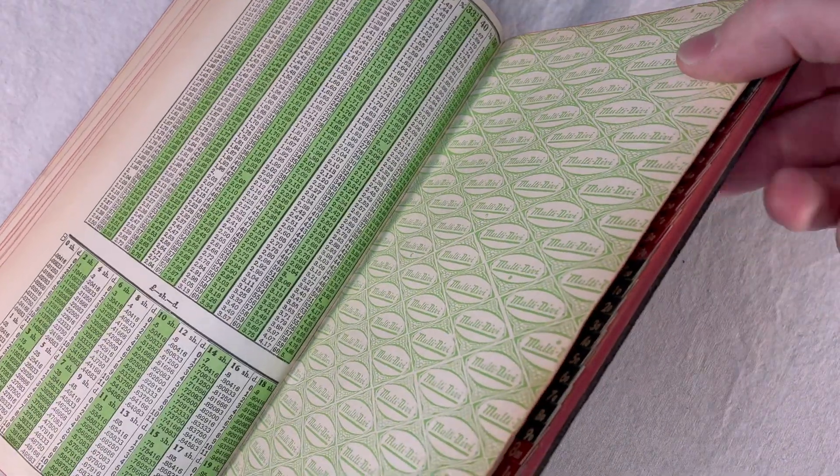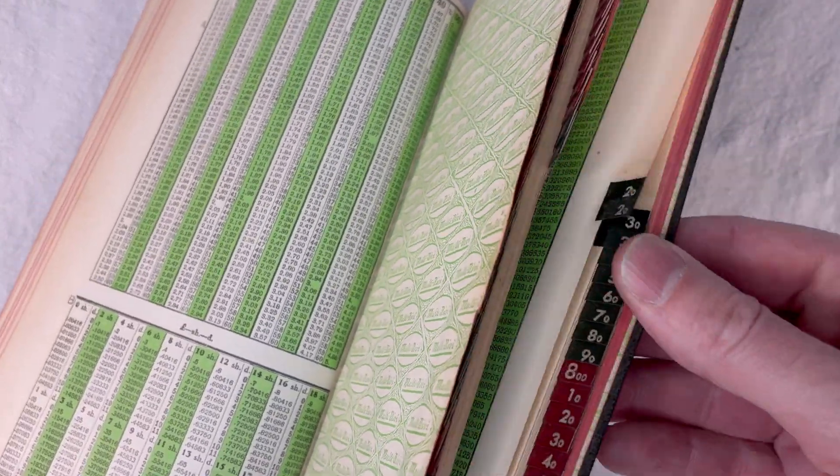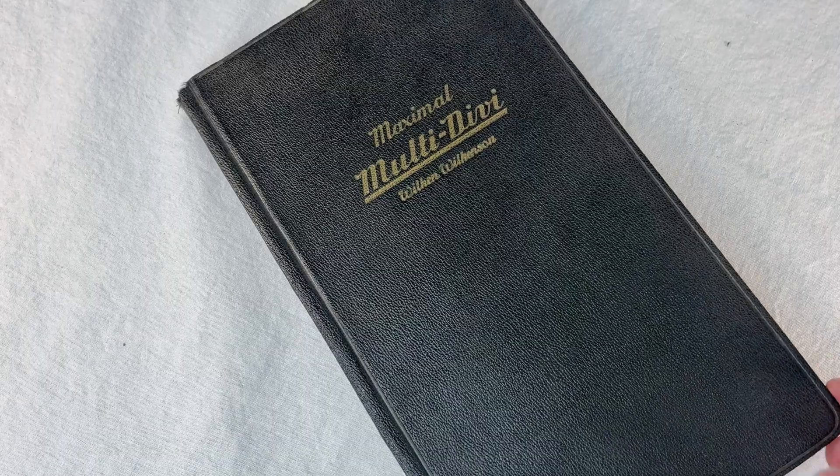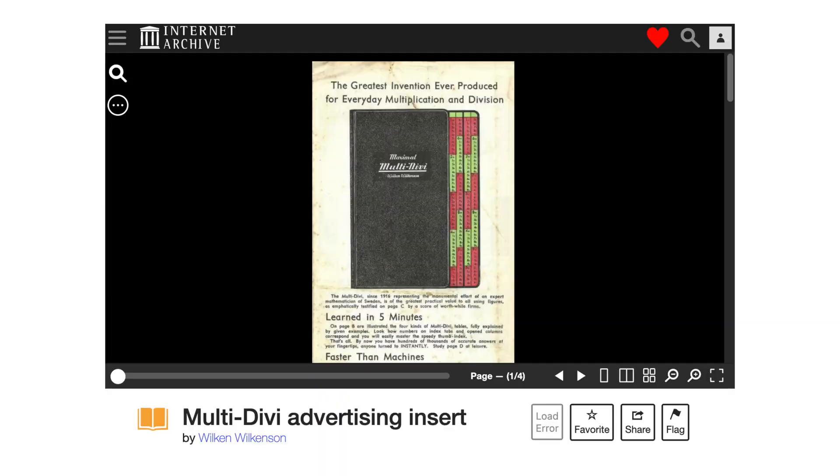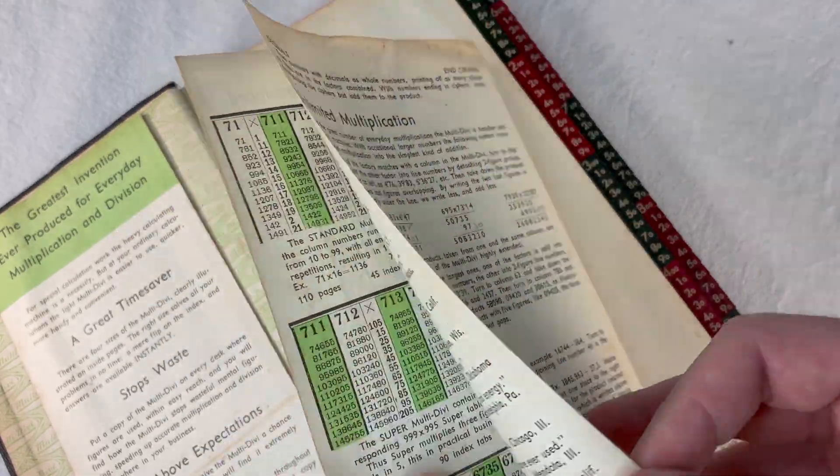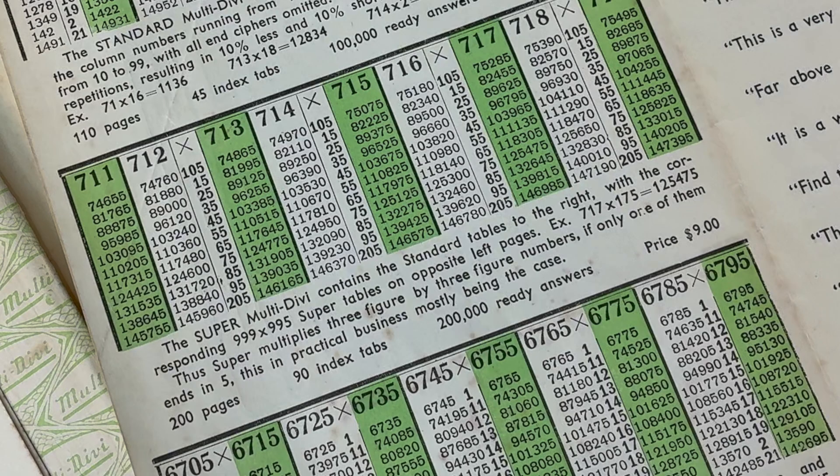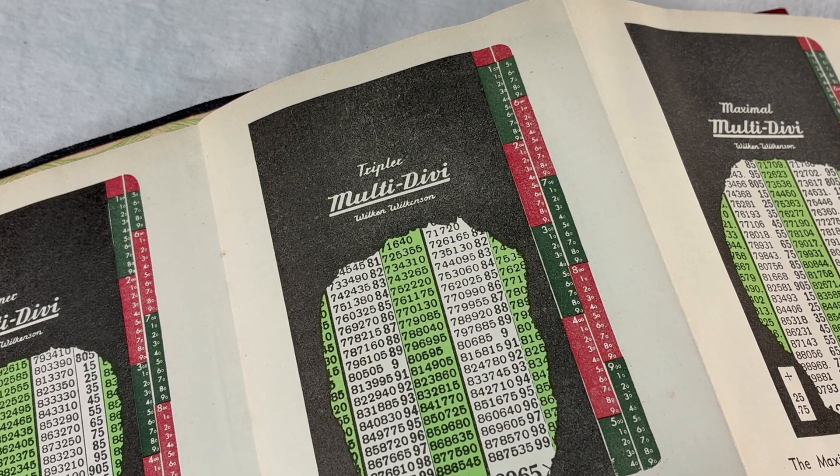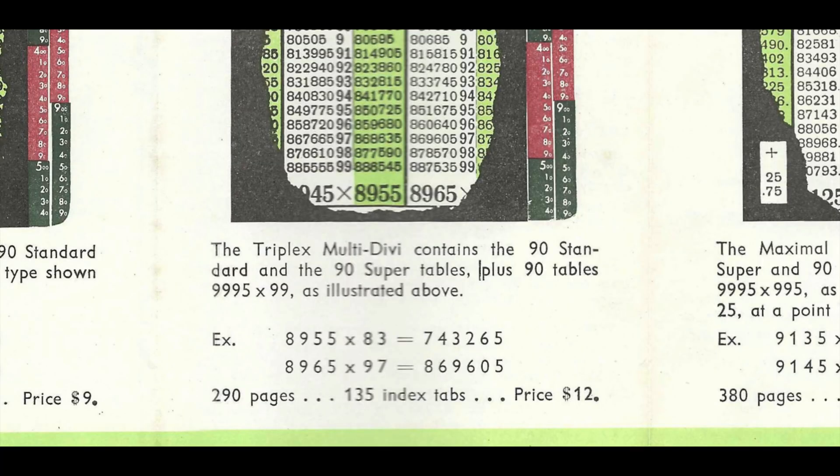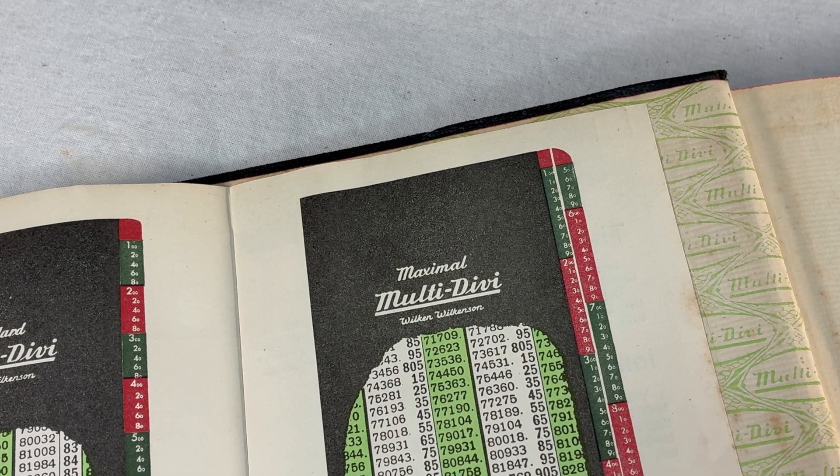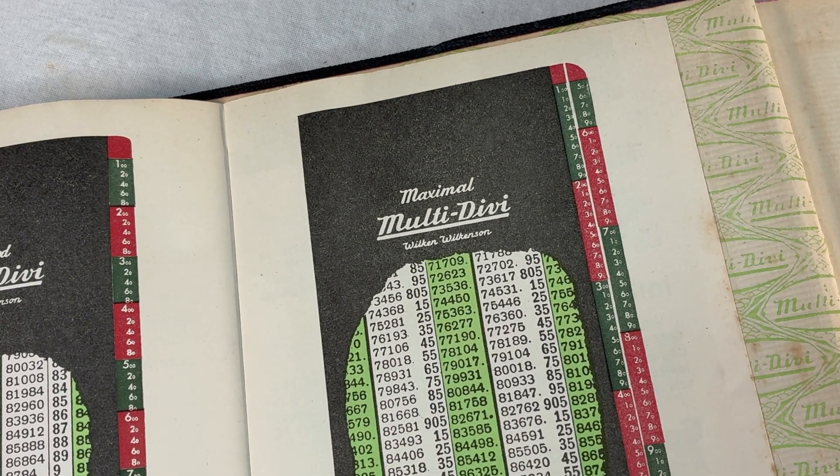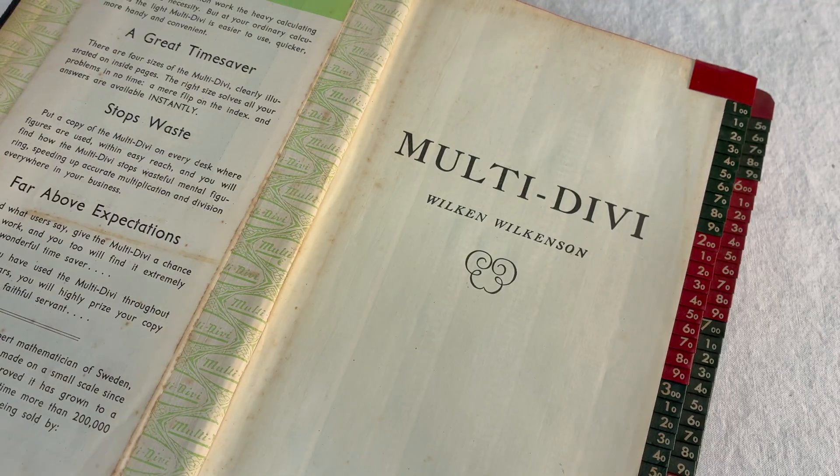But actually, we're only halfway through the book. What's in the other half? You see, Vilken actually made four different models of the Multi Divi. I have the original advertising insert. I scanned that one too. The standard Multi Divi has everything I just showed you. They call this the tables 999 × 99. The super Multi Divi also has the left hand table. Then you got the triplex Multi Divi. That has all that other stuff plus another section with 999.5 × 99 tables. And the Maximal Multi Divi also has 999.5 by 99.5 tables.